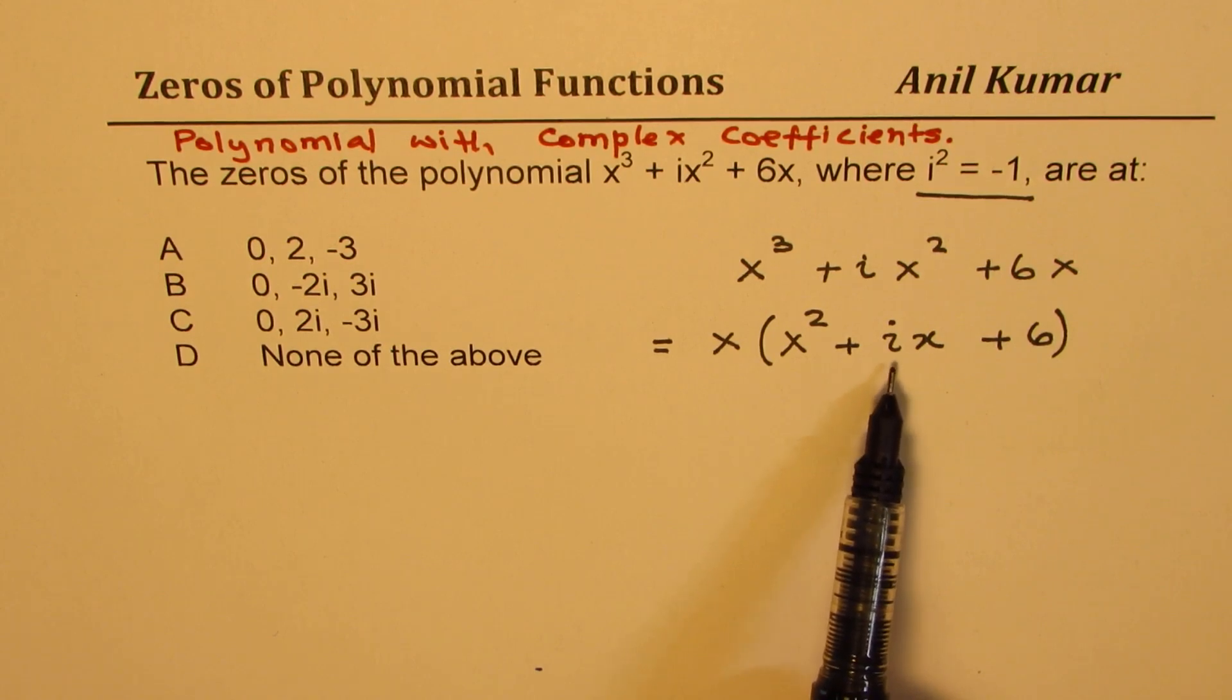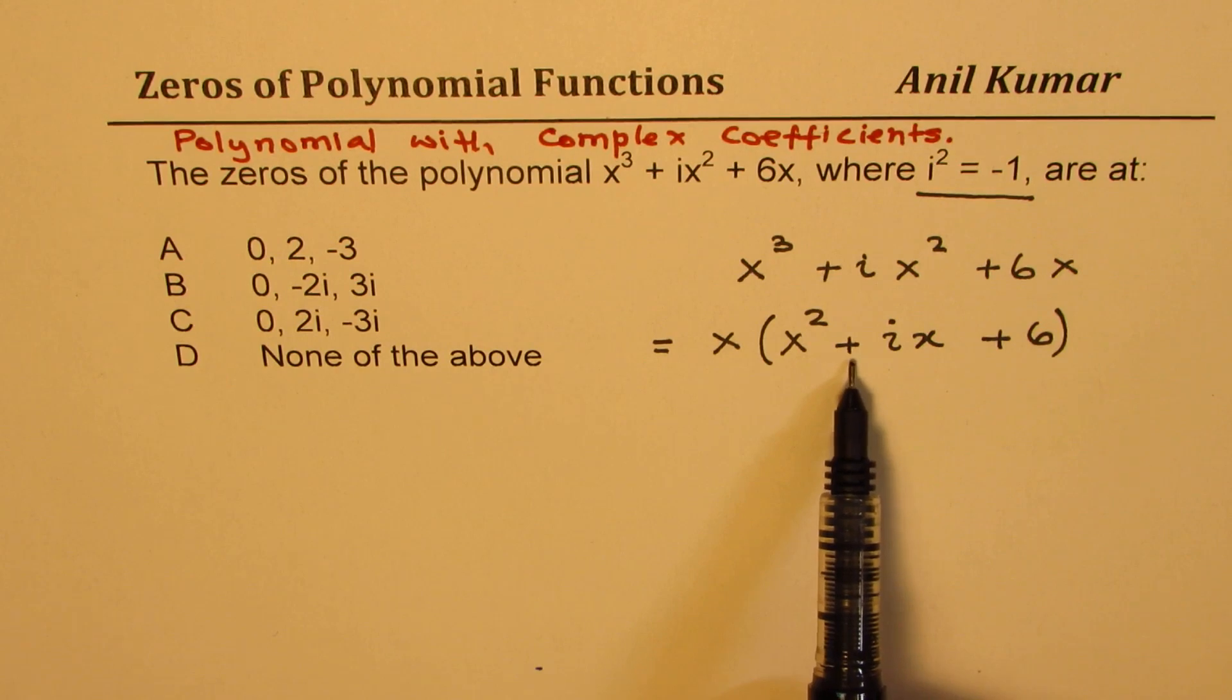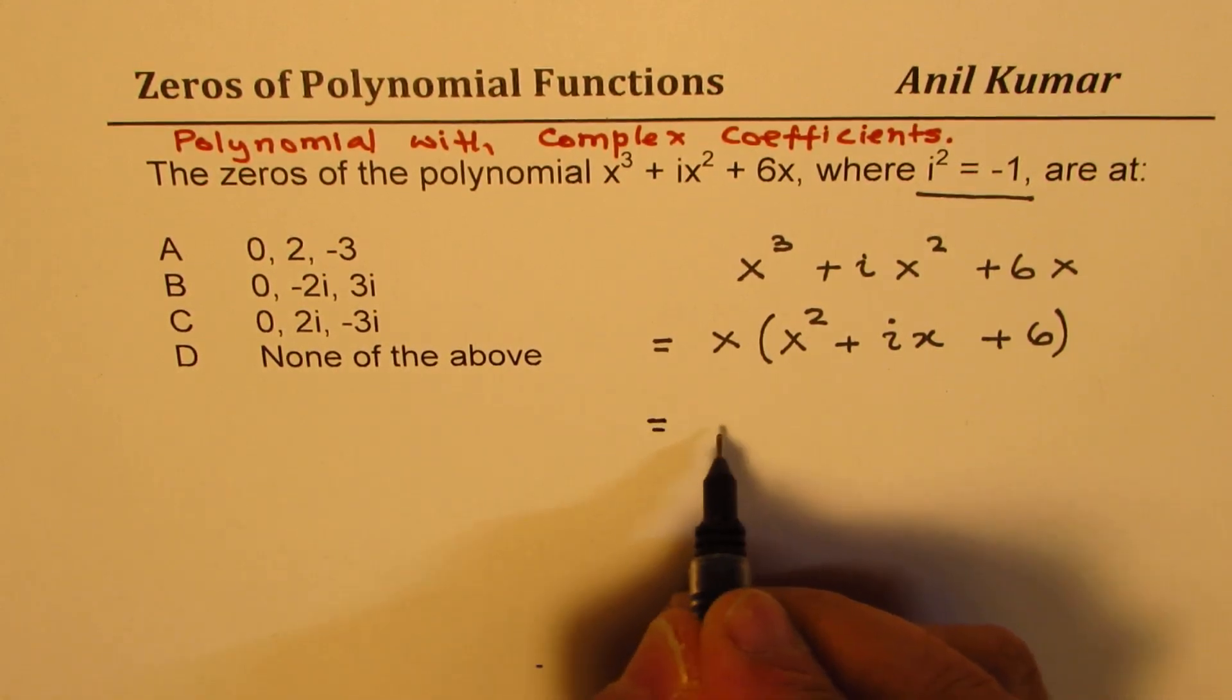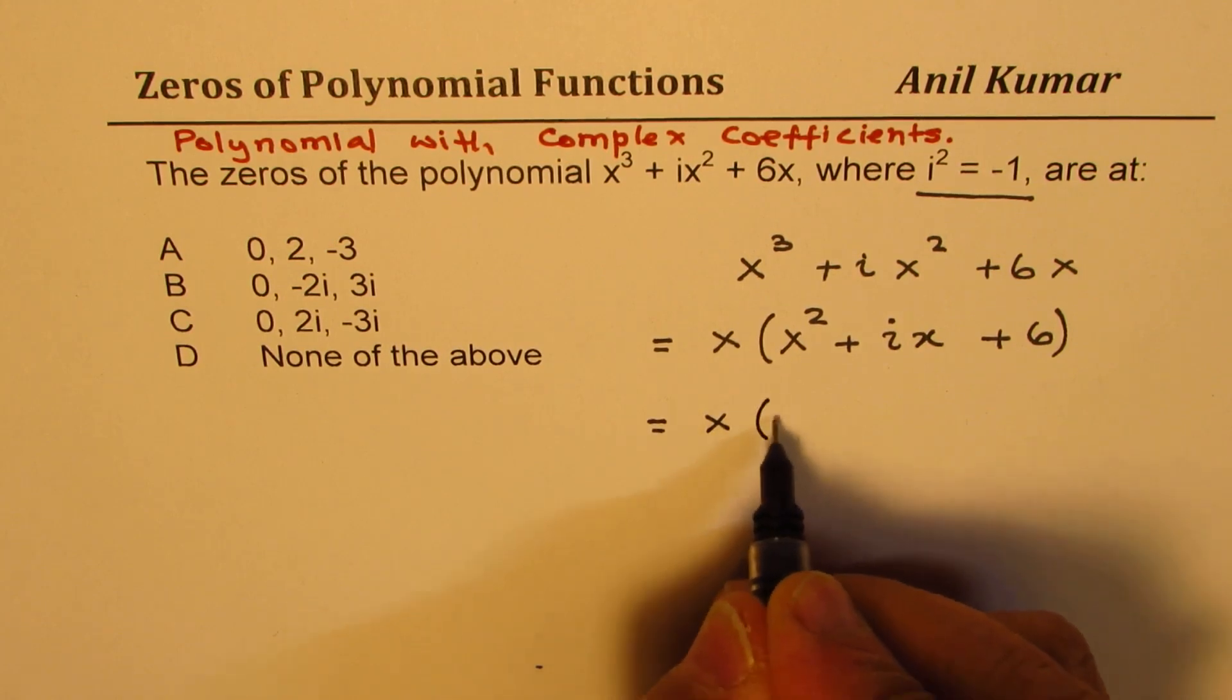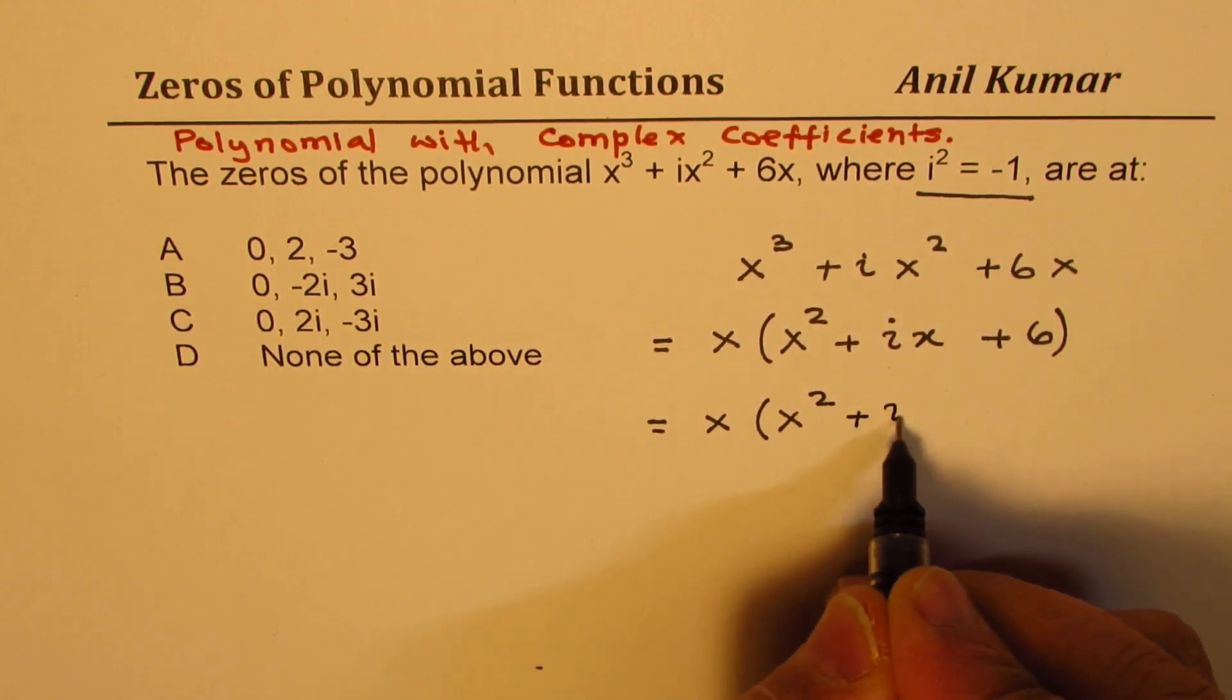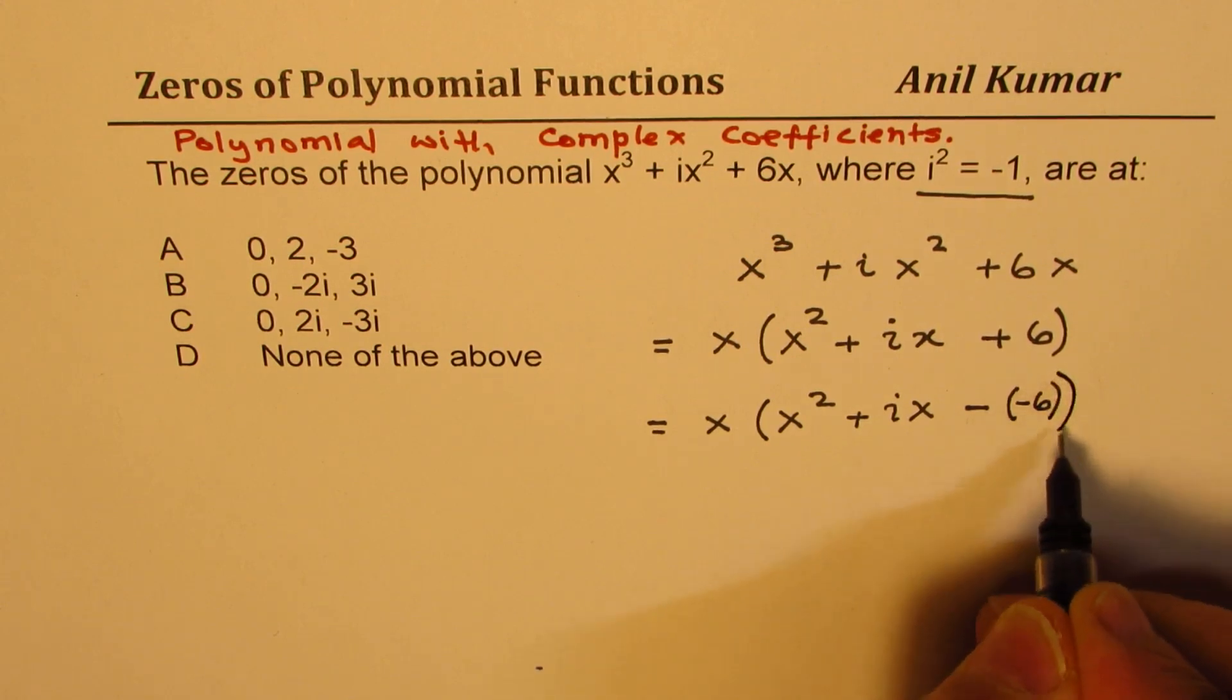The difference between this and what you normally use is that we have a coefficient which is complex. Now how do you factor this using the factoring techniques we know? Product of 6 and we are looking for sum of plus i. Now this could be resolved if I write or change this equation: instead of plus 6, let me write here as minus of minus 6.